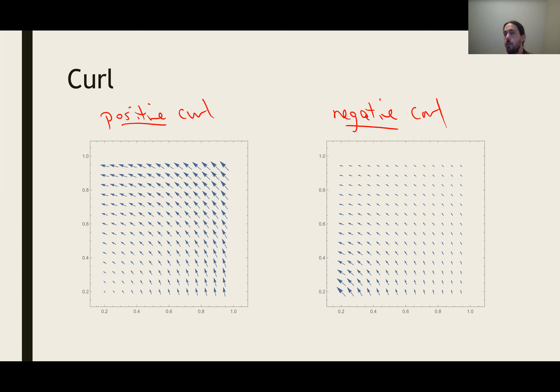And they look both like they're rotating counterclockwise. This vector field is globally rotating counterclockwise. And this other vector field is also globally rotating counterclockwise.